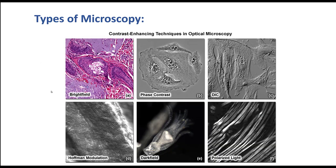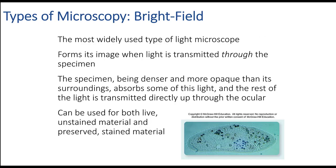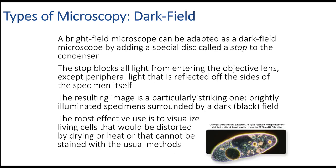Different types of microscopy beyond the standard light microscope include bright field, phase contrast, and dark field. Bright field is the most widely used — light is transmitted through the specimen. Dark field can be adapted from a light microscope by adding a special disc called a stop to the condenser. The resulting image is striking, with contrast illuminated around the specimen. Dark field is excellent for looking at internal structures.